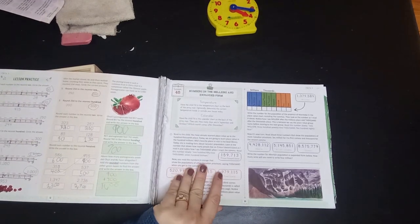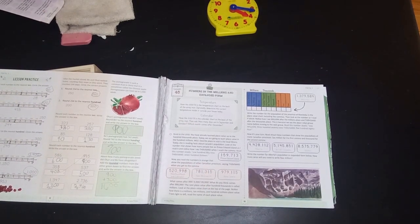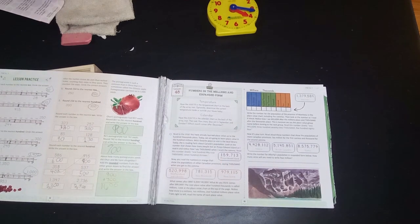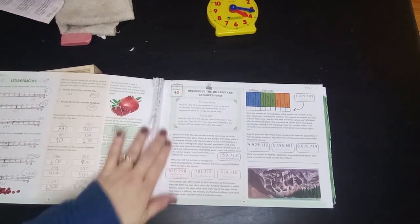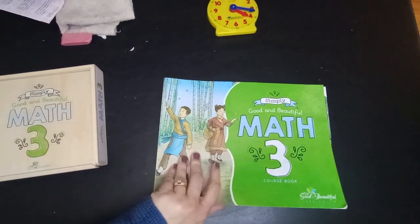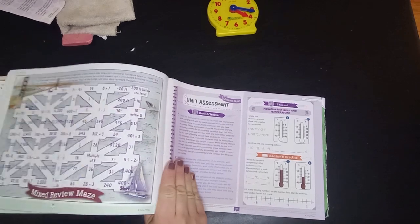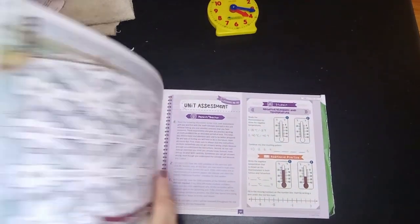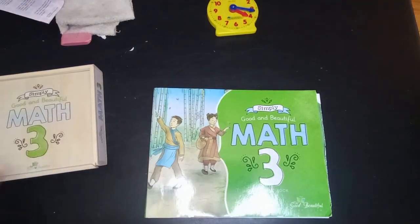But I do not love that part. I prefer the spiral binding. So math K and one come on spiral binding, the older grades don't, and I prefer the spiral binding. But that's a personal preference, other people don't. You do kind of need to break the spine on it by taking it and bending it. But that is a minor thing.